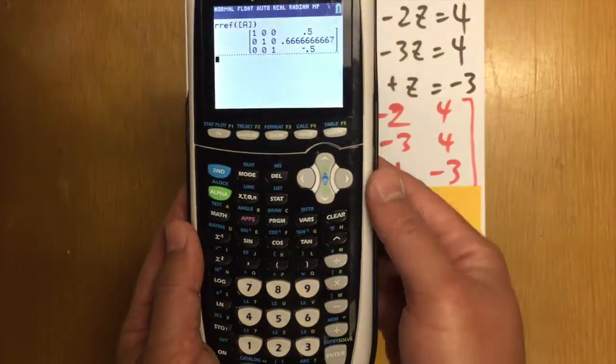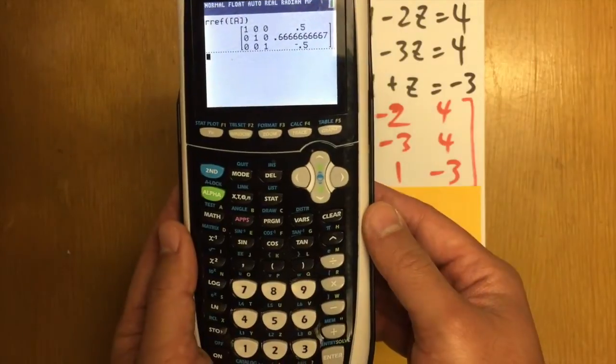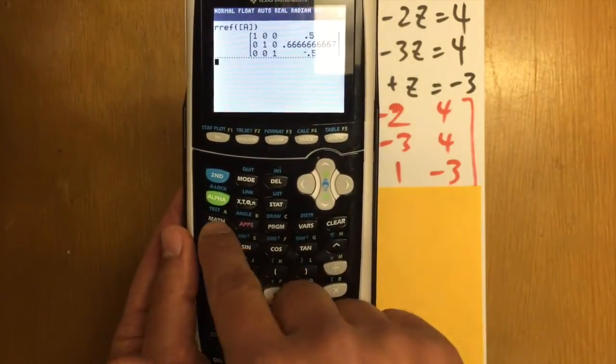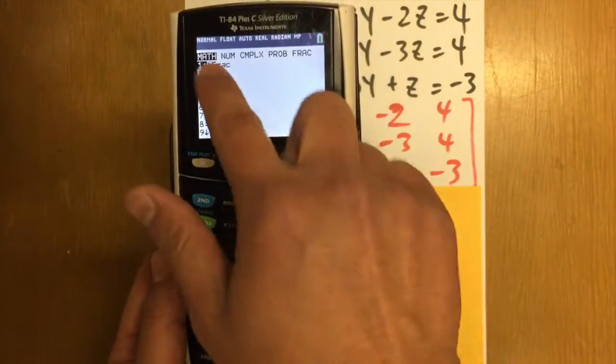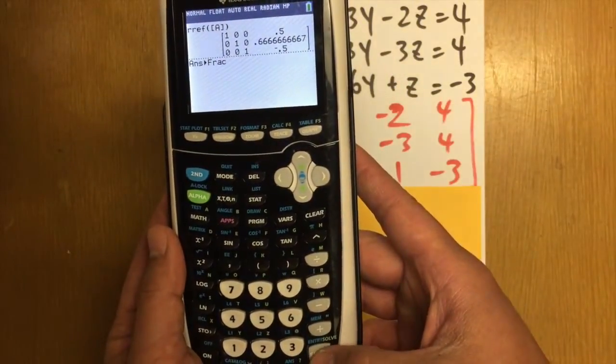But then, these are the decimal numbers. That's not so good. This is how we can do. We are going to go to math, and then just select the first one, so we can change the decimals to fractions.